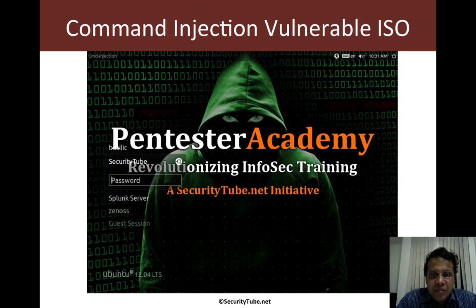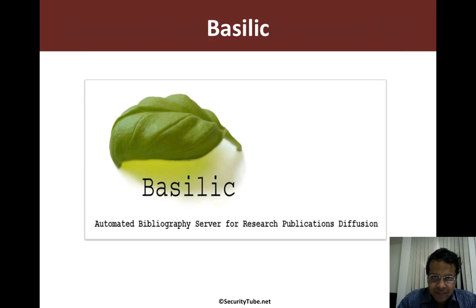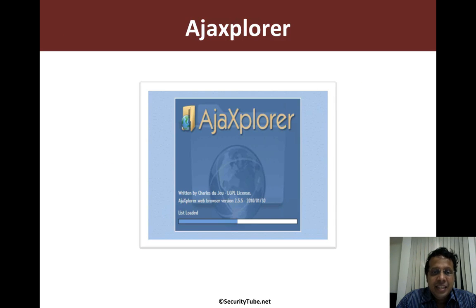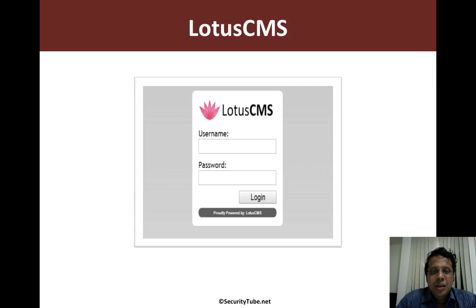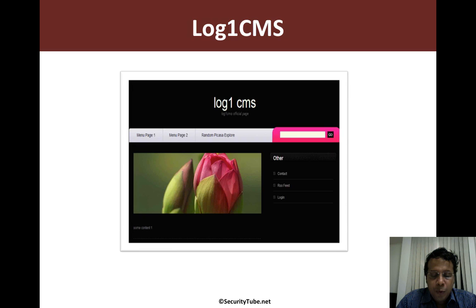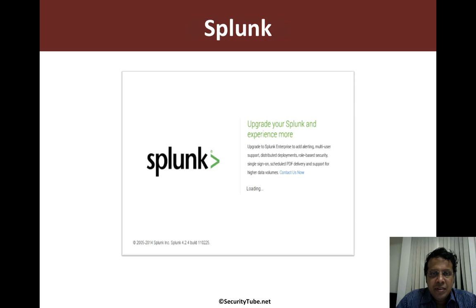This is where we've created the command injection vulnerable ISO, which has 10 applications in it with command injection vulnerabilities which you would need to exploit. The applications are: Basilic, PHP Charts, Ajax Explorer, Lotus CMS, PHP Tax, Log1 CMS, SugarCRM Community Edition, Webmin, and Splunk.